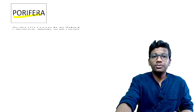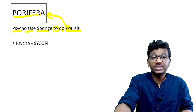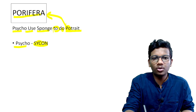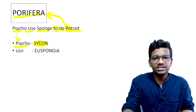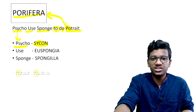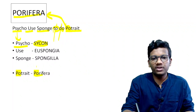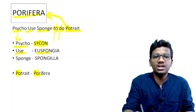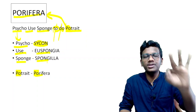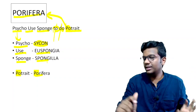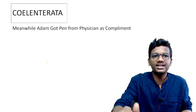Starting off with Phylum Porifera. The mnemonic for Porifera is: 'Psycho use sponge to do portrait.' The last word 'portrait' — PO — signifies Porifera. Psycho means Sycon, use means Euspongia, sponge means Spongilla. So three mnemonics, three examples of Porifera: Sycon, Euspongia, Spongilla under Porifera.